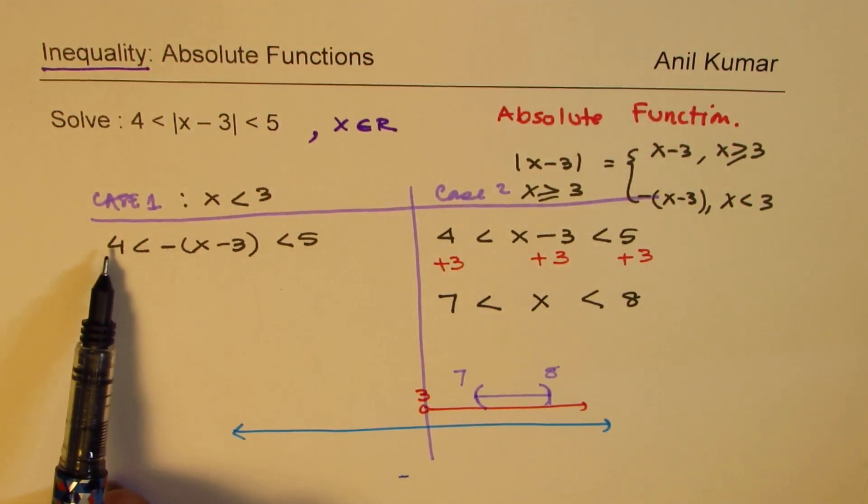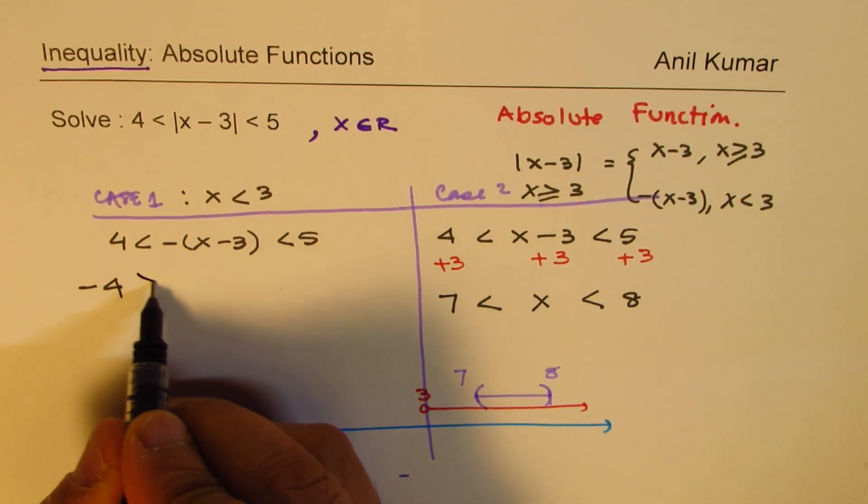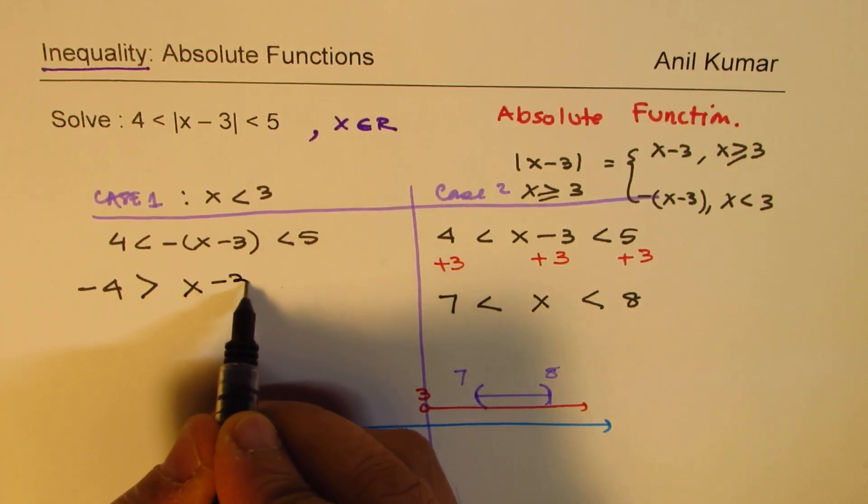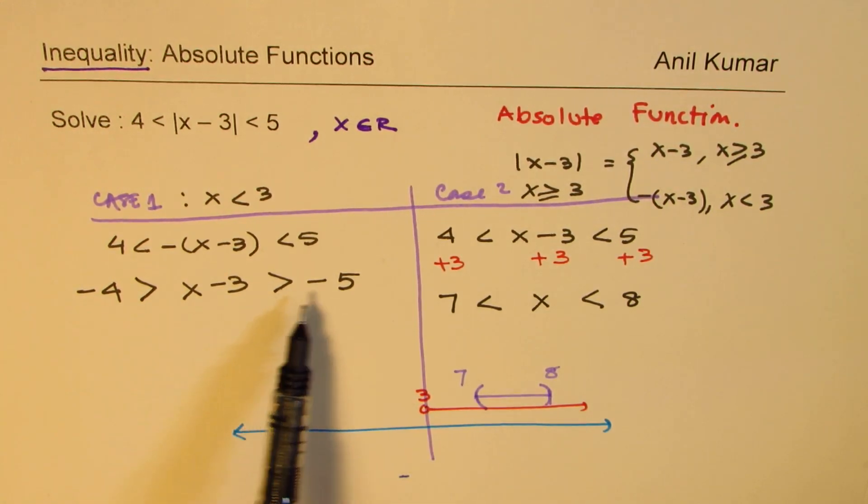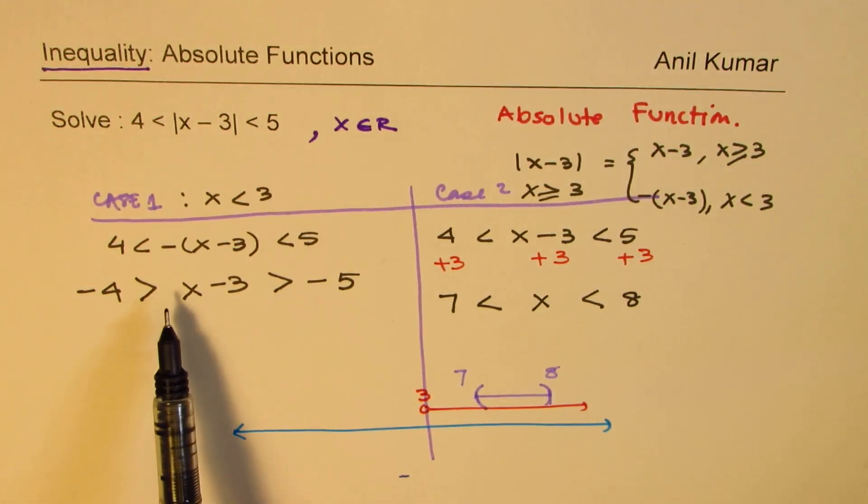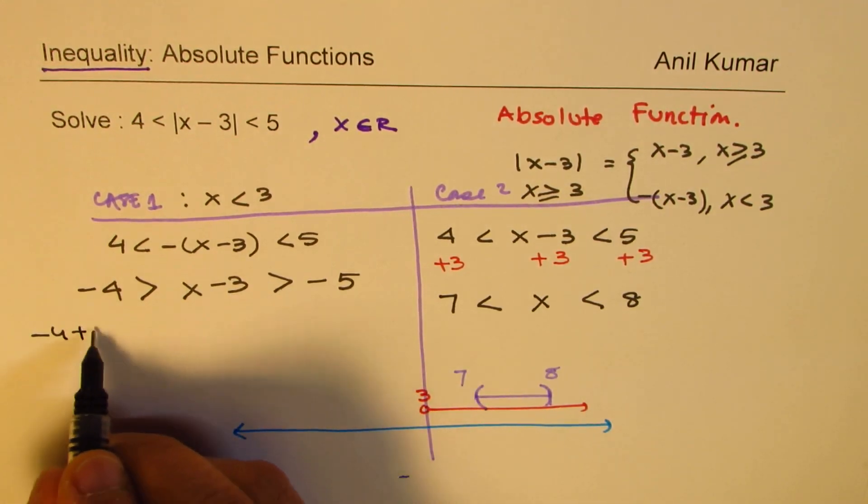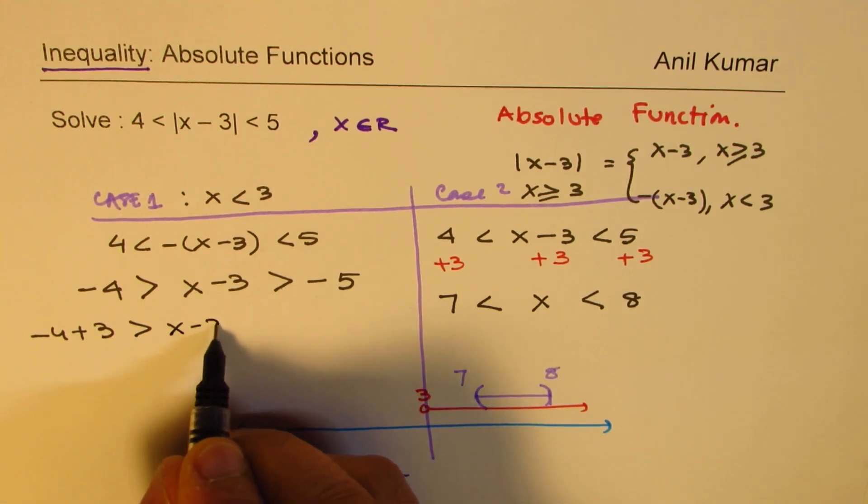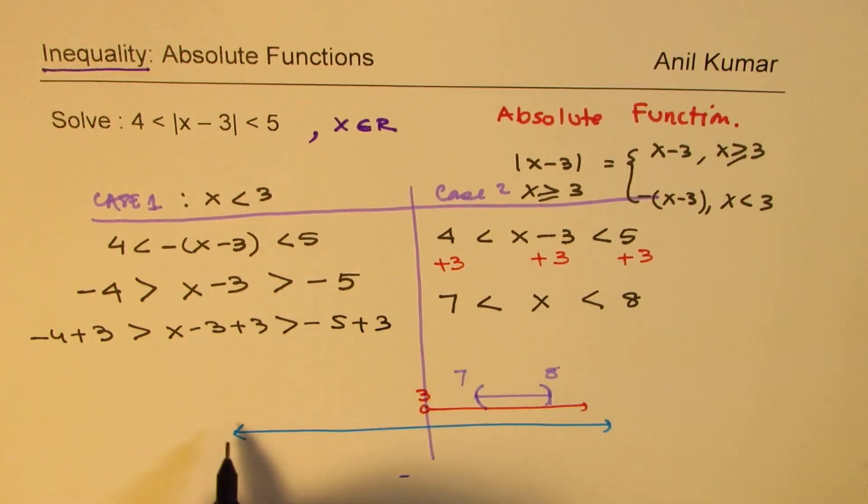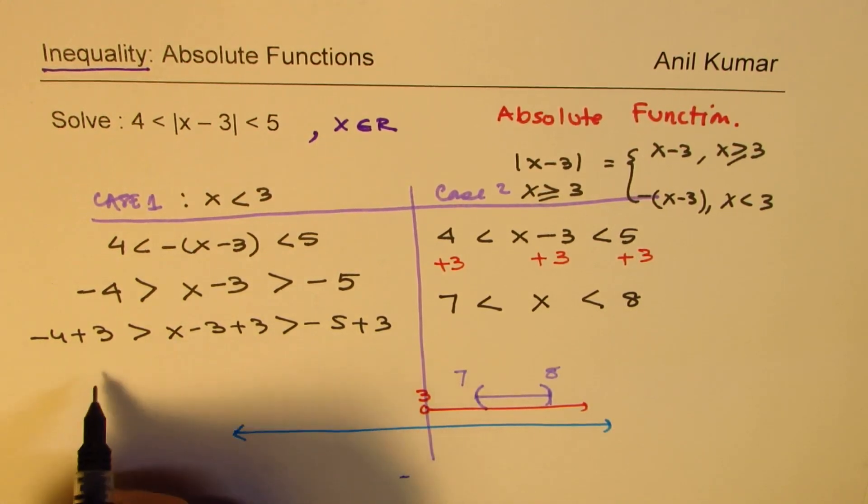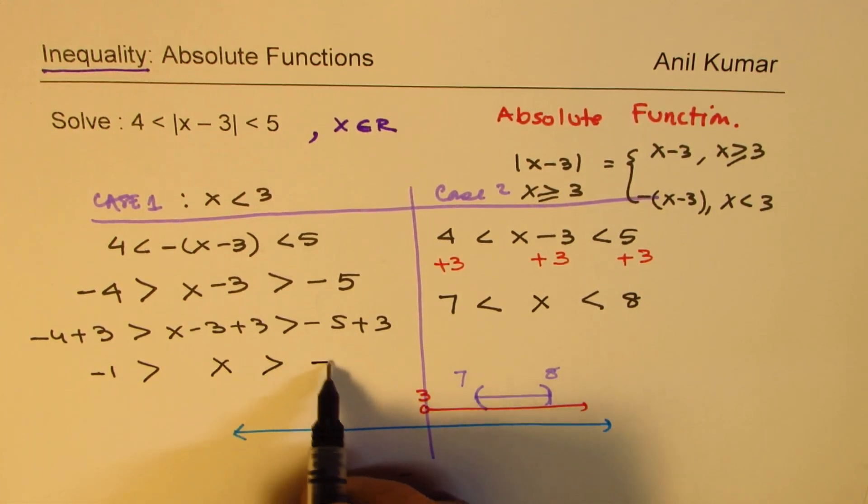Since this is negative, I will first multiply by negative. So it becomes minus 4, sign changes, minus 5. So whatever is in between is greater than minus 5 and less than minus 4. We will again add 3. So we get minus 4 plus 3 is greater than x minus 3 plus 3, and minus 5 plus 3. So minus 4 plus 3 is minus 1, this is x, and here you get minus 2.